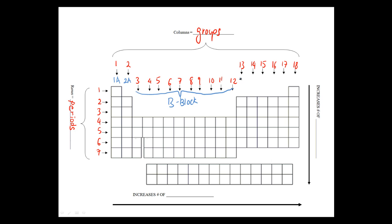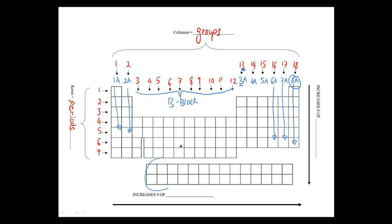This block over here continues on with the A block: group 3A, 4A, 5A, 6A, 7A, and 8A. So this group could be called group 18 or group 8A — either is acceptable. This would be group 17 or 7A, 16 or 6A. Similarly, group 2 or group 2A, group 1 or group 1A. You can see group 13 is group 3A. The B block — the transition elements and inner transition elements — are not really necessary for this course.